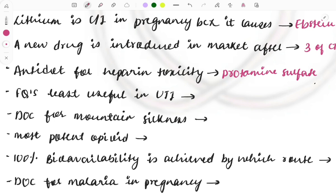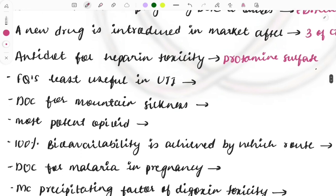Fluoroquinolones: which is least useful in case of urinary tract infection? It is moxifloxacin, because moxifloxacin does not attain its peak level in urine, so it will not show its action and should be avoided. The most effective fluoroquinolone for UTI is levofloxacin, and it is the most commonly used.